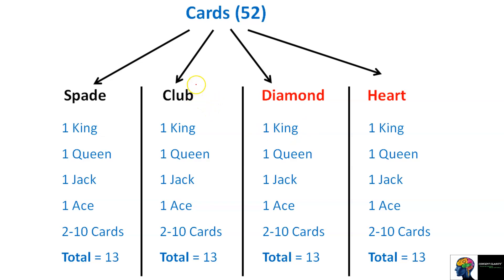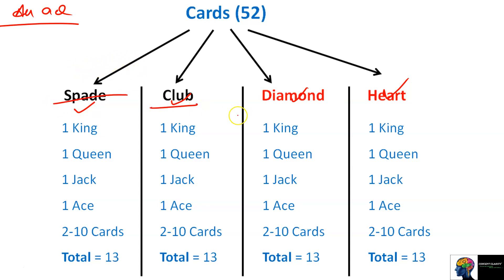Let's change the question. Find the probability of getting an ace. You can have an ace of Spade, Club, Diamond, or Heart — because I haven't specified that I need a black color ace or any particular suit. I just need an ace. So ace can be of any group or color, giving us 4 possible cards. The probability will be 4 by 52.